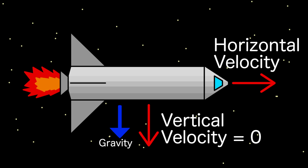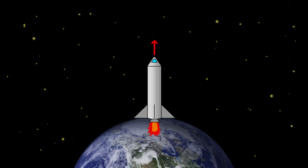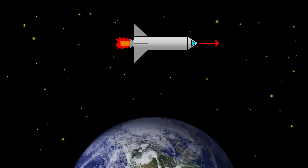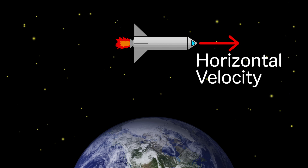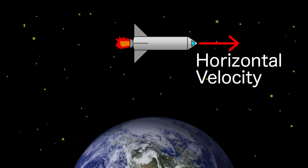But since the rocket first needs to get above the atmosphere to reach orbit, it will start out with purely vertical velocity, then slowly tilt 90 degrees, converting its vertical velocity to horizontal velocity. This final horizontal velocity is what needs to be calculated.